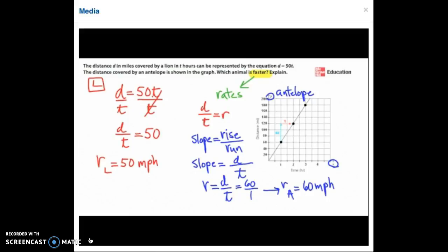Now that we've determined the rates of the two animals, we know that 60 is greater than 50. And so the antelope is faster. Thank you for using McGraw-Hill Personal Tutors.